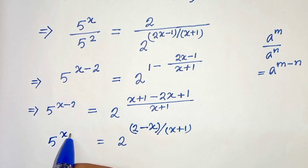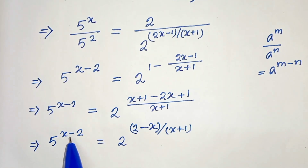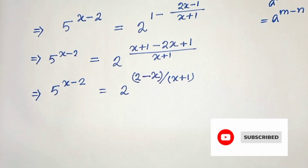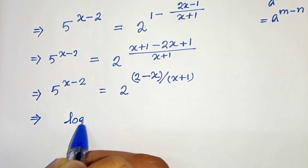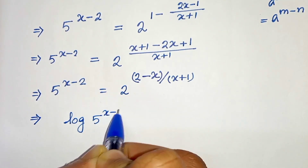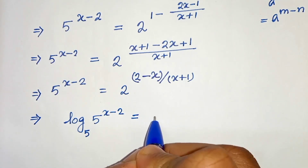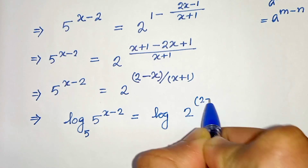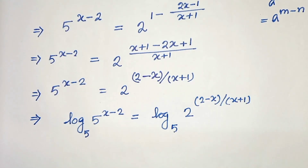And on the left hand side we have 5 to the power (x minus 2). Now to set x free, we will take logarithm with base 5. So taking logarithm with base 5: log base 5 of 5 to the power (x minus 2) equals log base 5 of 2 to the power (2 minus x) divided by (x plus 1).